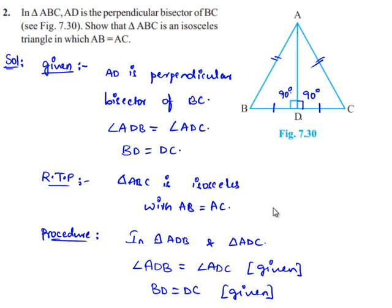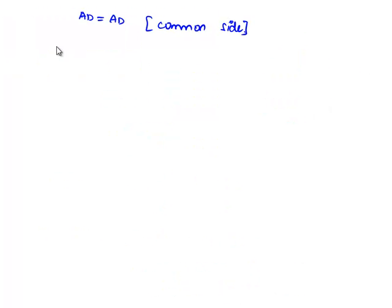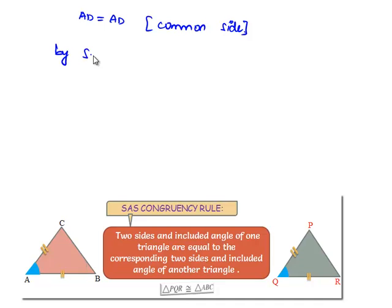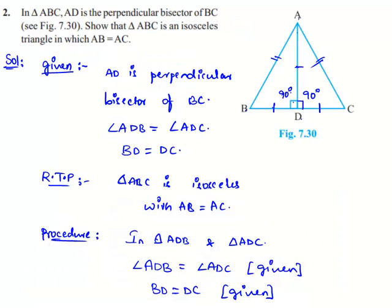By side-angle-side property, we can say that triangle ADB is congruent to triangle ADC. When two triangles are congruent,